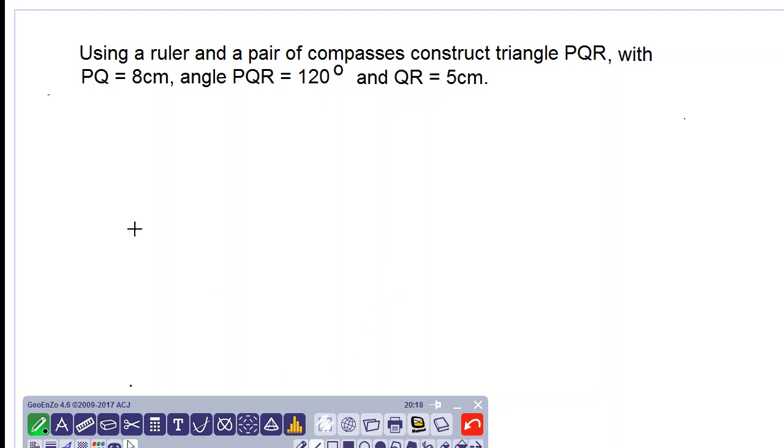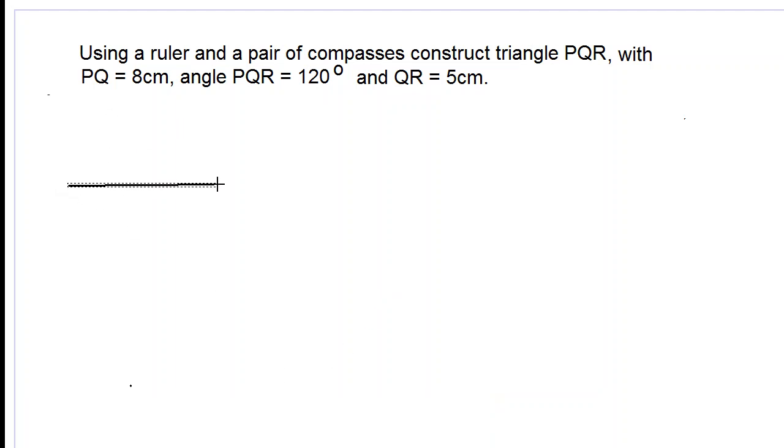As always, we do our little sketch. We have PQ which should be 8 centimeters long, then we have QR which should be 5 centimeters long, and then we have the angle Q which is 120 degrees. We want to construct this.